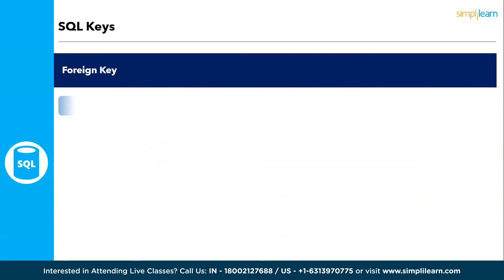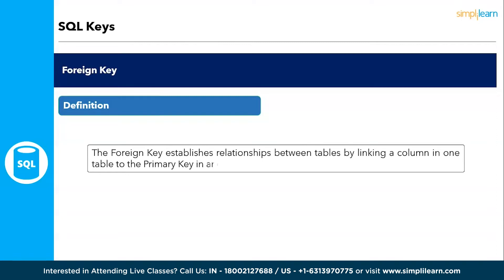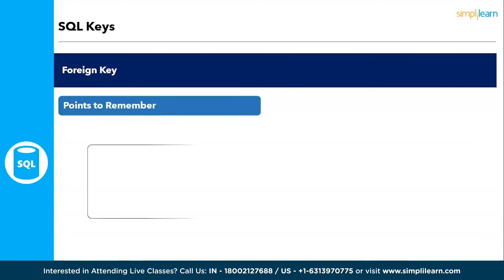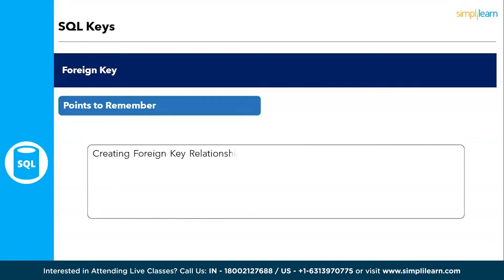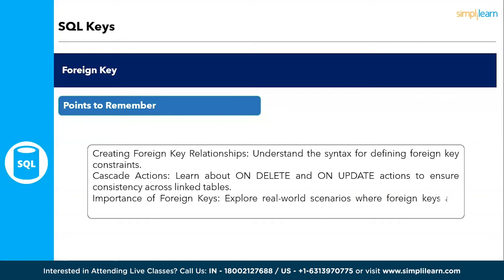The second key is the foreign key. A foreign key establishes relationships between tables by linking a column in one table to the primary key in another, maintaining referential integrity. Key points to remember: creating foreign key relationships and the syntax for defining foreign key constraints; cascade actions — ON DELETE and ON UPDATE — to ensure consistency across linked tables; and the importance of foreign keys in real-world database integrity scenarios.